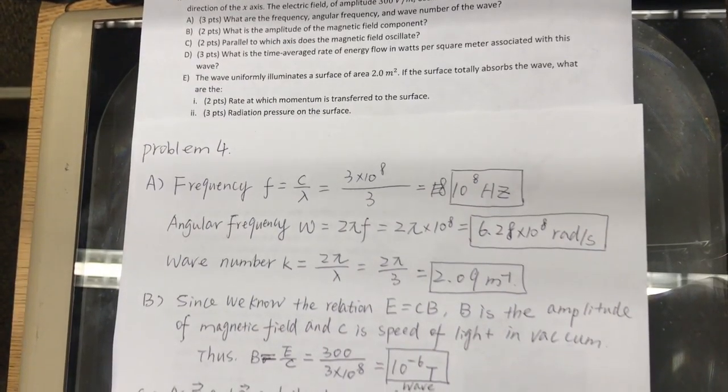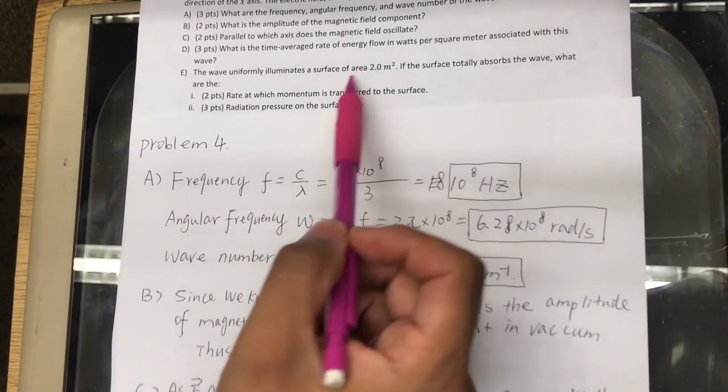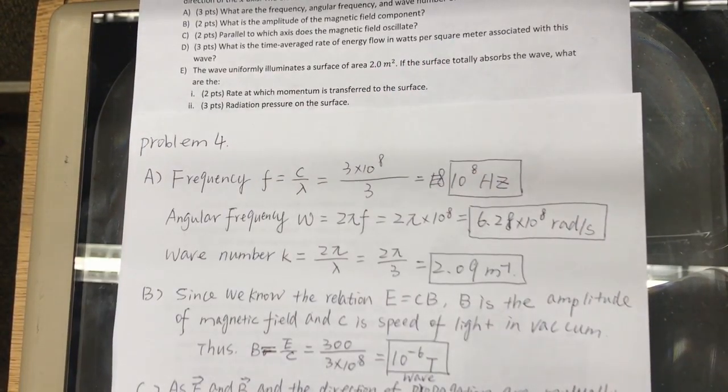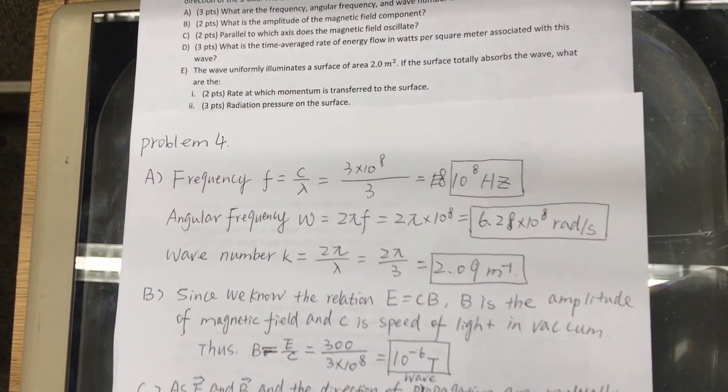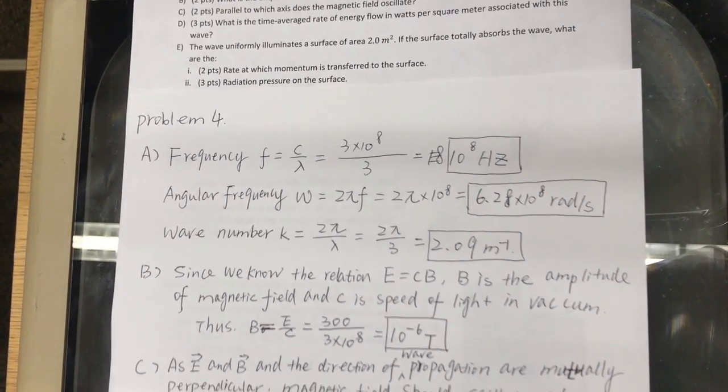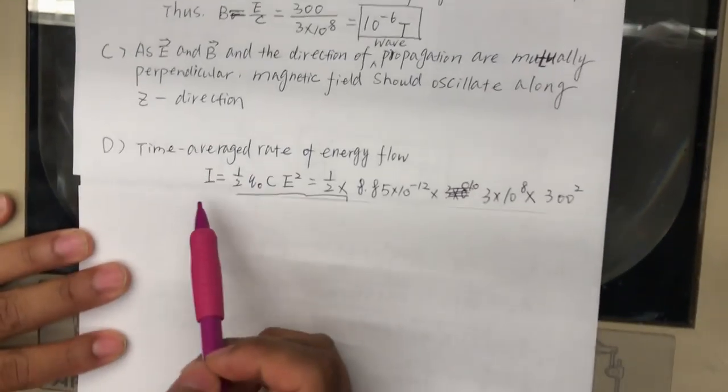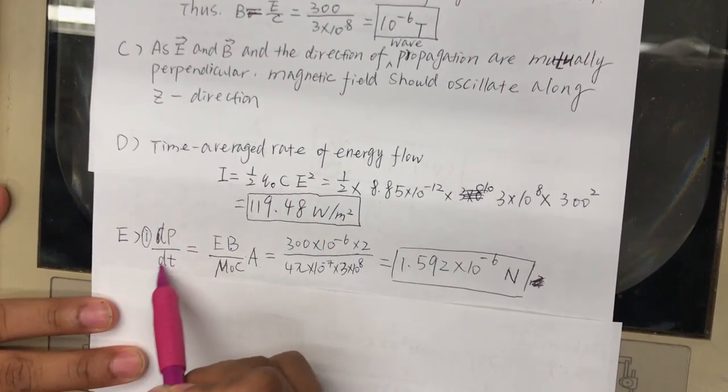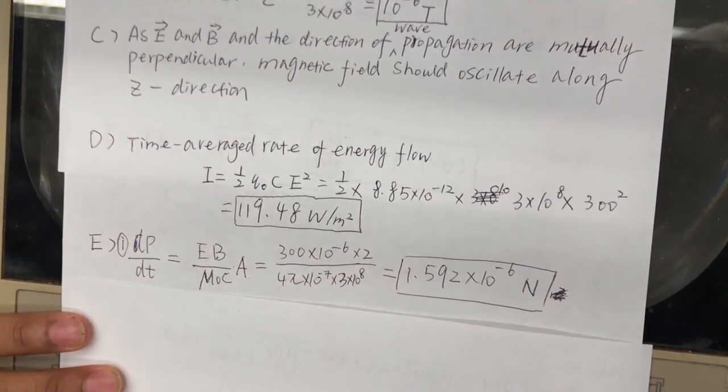The wave uniformly illuminates the surface area, the surface, a surface of area two meters squared. If the surface totally absorbs the wave, what are the rate at which momentum is transferred to the surface? Well, that is, sorry, that is dp/dt.